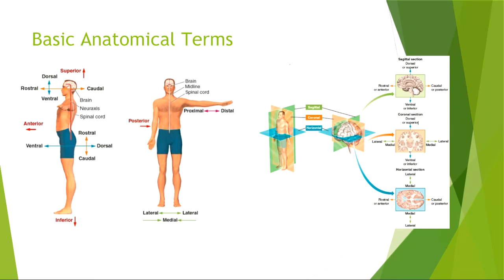Looking at this picture on the slide, the simplest division is between superior and inferior. Superior means towards the top; inferior means towards the bottom. Most of these terms are relative — don't think that your feet are always inferior and your head always superior. Your knees are superior to your feet, but your head is superior to your knees. So it's a relative term — and it works the other way around as well.